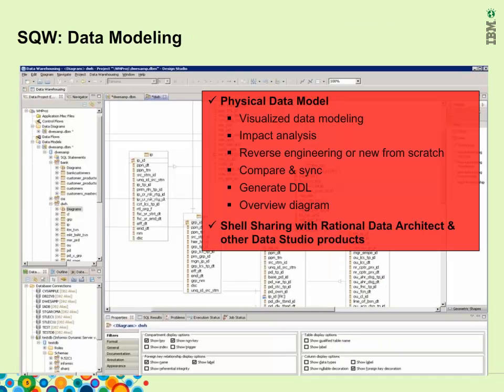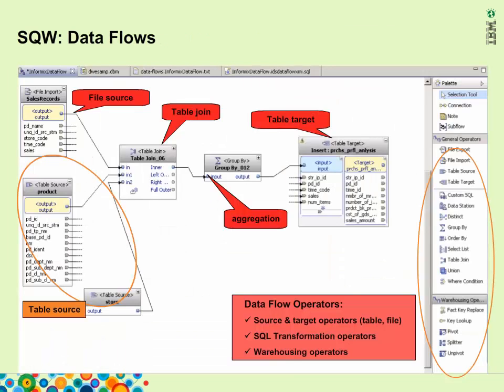You can also generate DDLs from the model and generate overview diagrams, as shown above. Since Design Studio shares its shell with RDA and other Data Studio products, you can install those products on top of Design Studio or vice versa. RDA has logical data modeling and ER diagram capabilities. An example of a data flow: on the right-hand side is the operator palette. General operators are for data source, target, and SQL transformation. Warehouse operators are for warehousing-specific usage, for example pivot and unpivot, and fact key replacement. There are also Informix-specific operators such as add fragment.